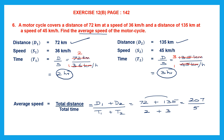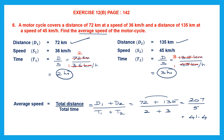In the denominator we have 2 plus 3 which is 5. So we divide 207 by 5. 5 fours are 20, remainder 7; 5 ones are 5, remainder 2. Since the remainder is not zero, we put a decimal point and bring down a zero — 20 divided by 5 is 4. So we get 41.4. The average speed is 41.4 kilometers per hour.